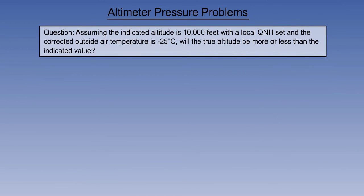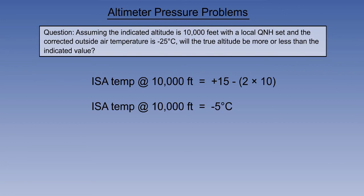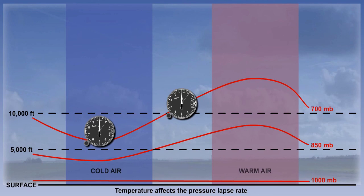Let's look at another example. Assuming the indicated altitude is 10,000 feet with the local QNH set and the corrected outside air temperature is minus 25 degrees Celsius, will the true altitude be more or less than the indicated value? The ISA temperature at 10,000 feet would be plus 15 at sea level minus 2 degrees per thousand feet, giving plus 15 minus 20, which is minus 5 degrees Celsius. At minus 25 degrees Celsius we are flying in ISA minus 20 degrees — colder than standard conditions. A colder temperature means the altimeter over-reads; the true altitude will be less than the indicated altitude.